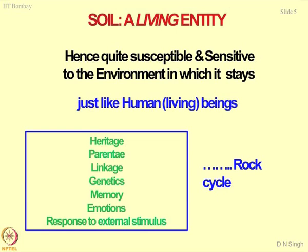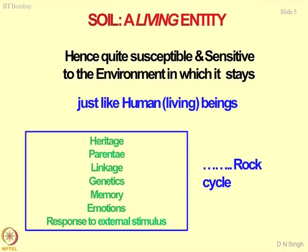The best way to understand soil formation is the rock cycle. What is the difference between soils formed from metamorphic rocks, igneous rocks, and sedimentary rocks? You will notice they follow complete heritage and parentage — there cannot be any cross-linking between them. The soil formed out of igneous rocks will have specific properties. For example, if granite weathers, a completely different process takes place, which you study in geology courses. The rock cycle is a good example of how these attributes can be studied.